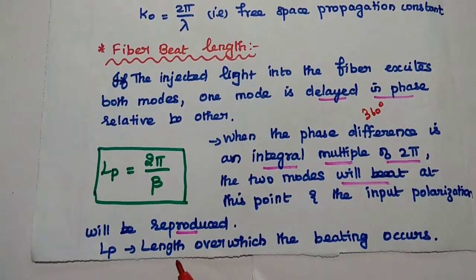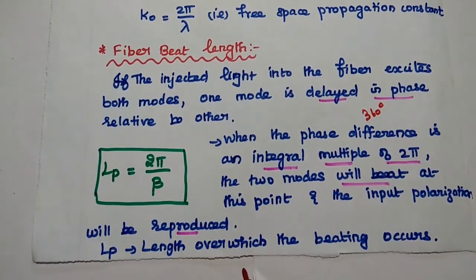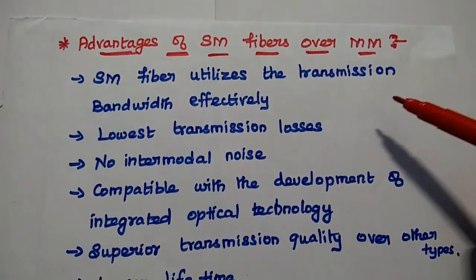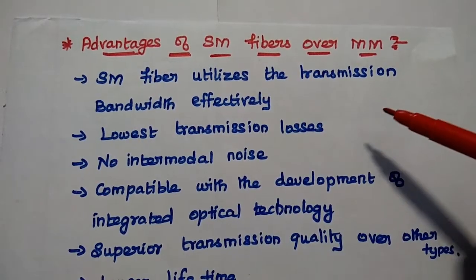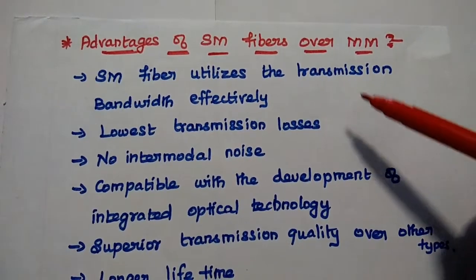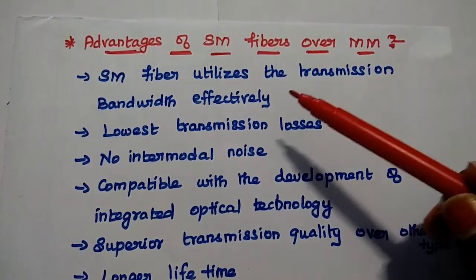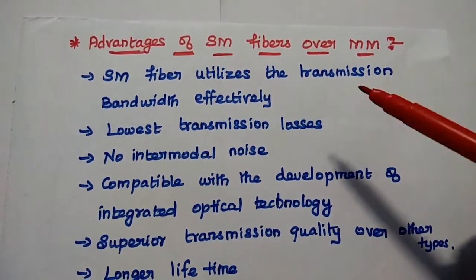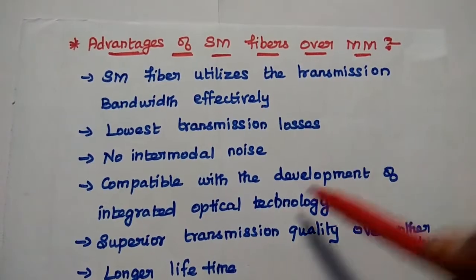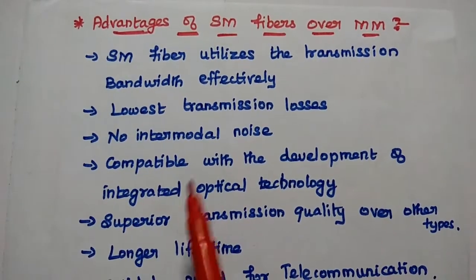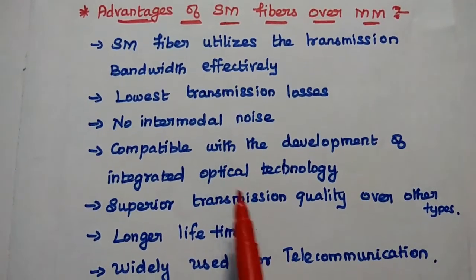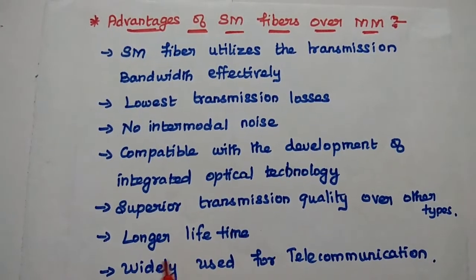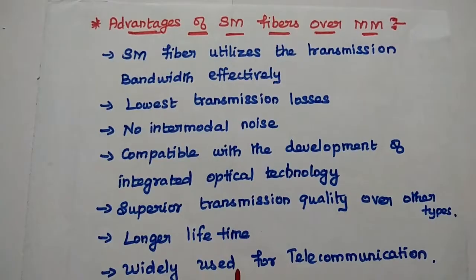The fiber beat length LP = 2π / β, where LP is the length over which the beating occurs. The advantages of single mode fibers over multi-mode fibers: single mode fiber utilizes the transmission bandwidth effectively since it has only one mode of propagation. It has the lowest transmission losses, no intermodal noise, is compatible with integrated optical technology, has superior transmission quality, and longer lifetime. It is widely used for telecommunication.